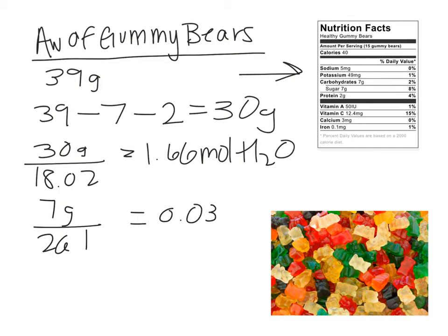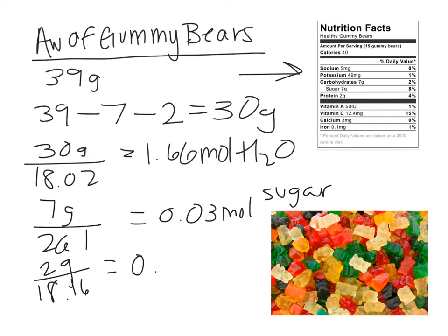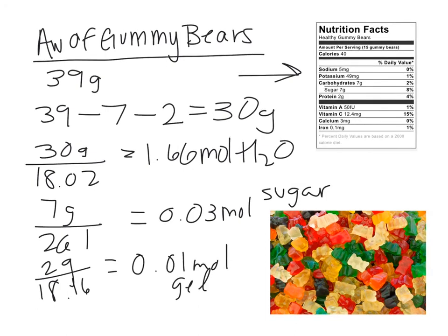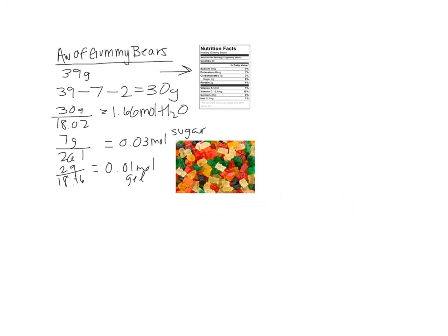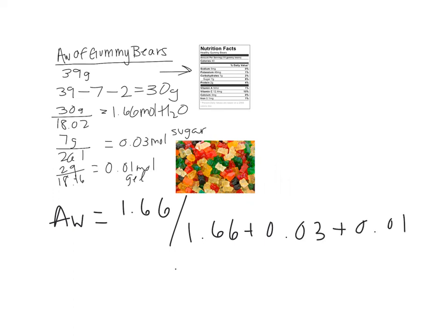We get 0.03 moles of sugar, which is much less than the water — which makes sense. For the 2 grams of protein, which is gelatin, we use a molecular weight of 18.16 and get 0.01 moles of gelatin. Now we can calculate the final water activity: AW equals moles of H2O divided by total moles (sugar + gelatin + water), giving us a water activity level of 0.976.